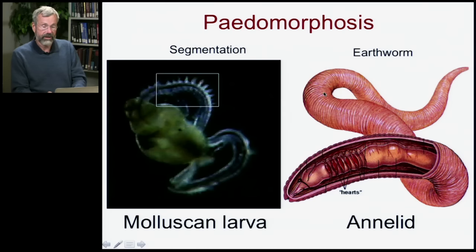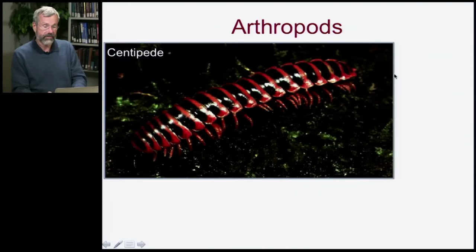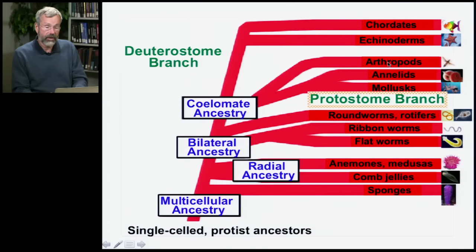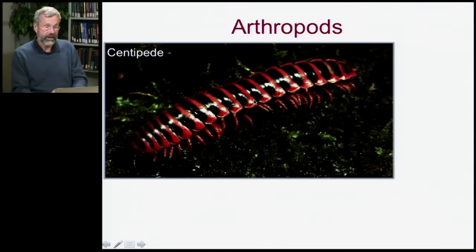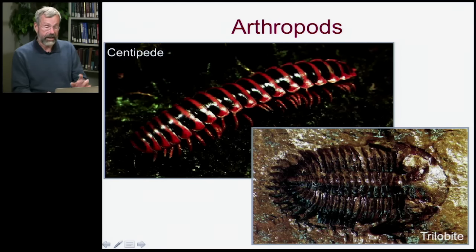Mollusks and annelids are all segmented — earthworms are segmented. Related to them are the arthropods, which again show segmentation. The very simplest arthropods are like the centipede: a leg and a body segment repeating all the way through the body. Fossil trilobites show this pattern way back in time — they're arthropods like insects and crabs, with segmented bodies and an external skeleton.